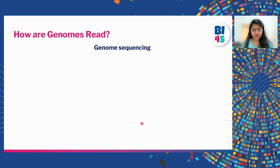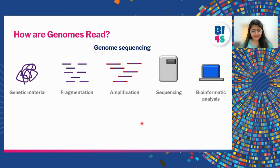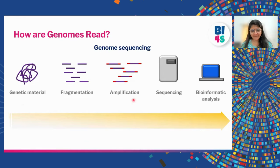How can we read genomes? The human genome is about 3.3 billion letters — it's impossible to read manually. For that we have a procedure called genome sequencing: you take genetic material from an individual, fragment it, make many copies through amplification, then read it with a machine called a sequencer. Even then, we bring in computers and bioinformatic analysis to read through the genome and find any errors.